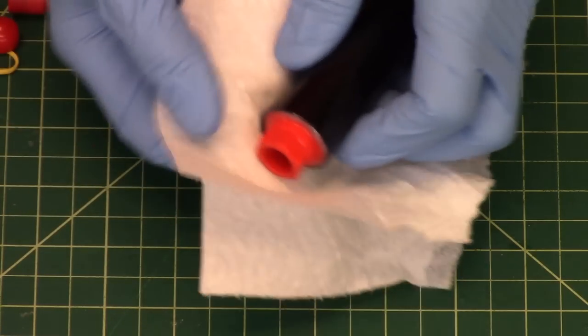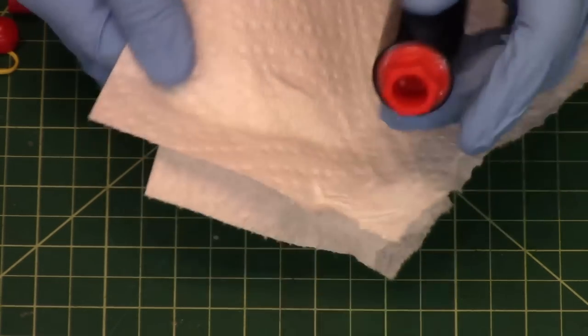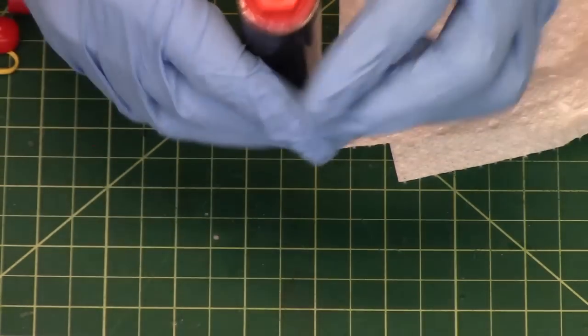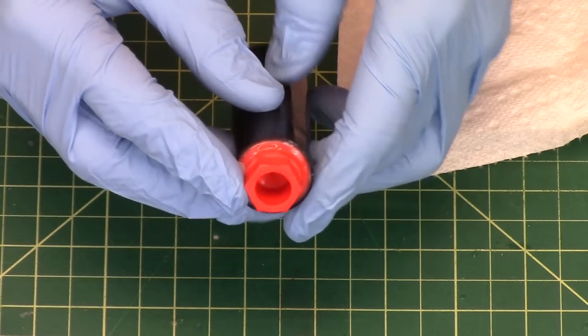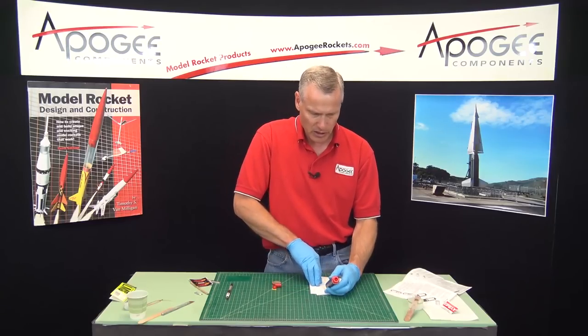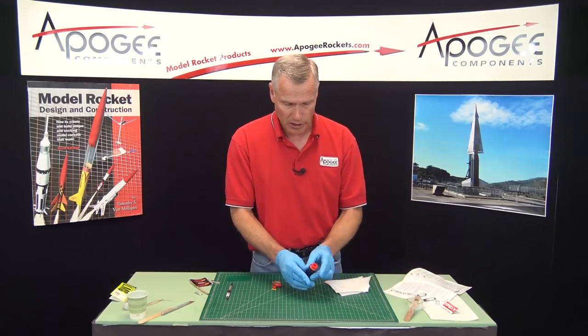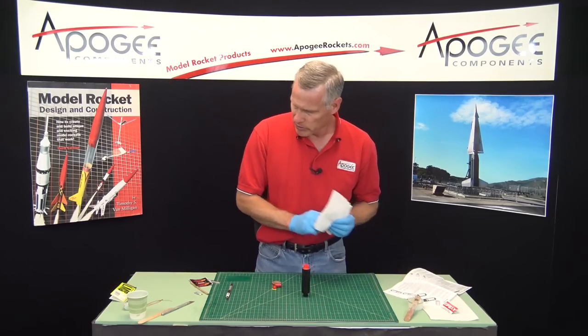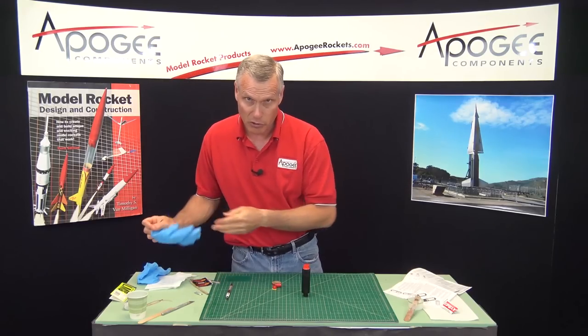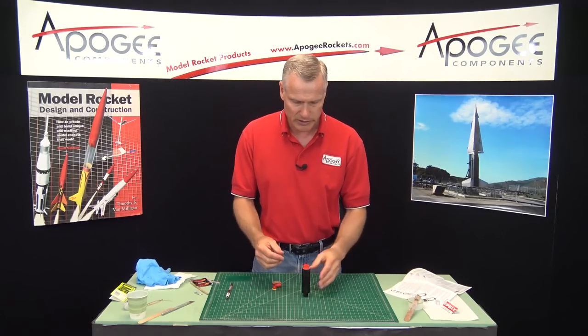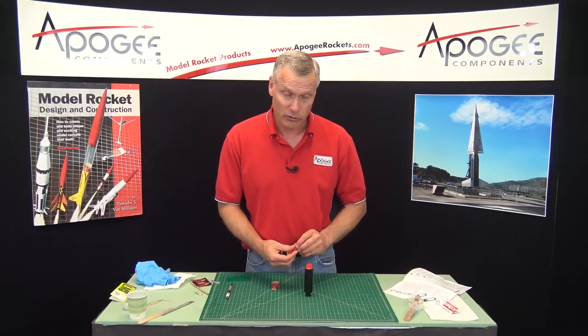And then I'm going to wipe off any excess epoxy that oozes out. And you want to make sure that this is going to harden. If you're out on a launch range, it's five minute epoxy, but I would give it maybe 20 minutes before you fly your rocket. You can do these the night before. You can do these a year before. They don't really have a shelf life. People always ask how long do rocket motors last. Probably a good 20 years at least. That's my standard answer. I'm sticking to it.